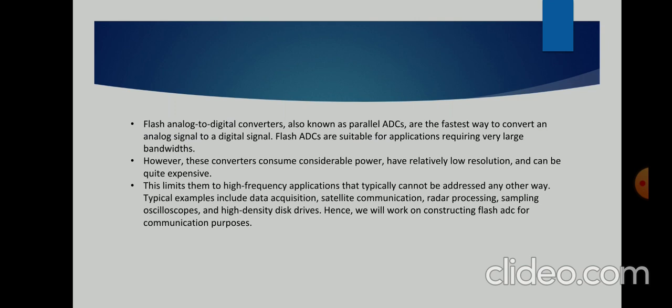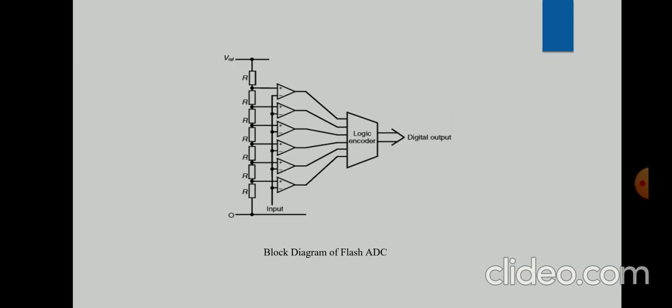Applications include data acquisition, satellite communication, radar processing, sampling oscilloscopes, and high density disk drives. The block diagram of the Flash ADC shows the resistor ladder network, the input voltage, the reference voltage (Vref), and the ground. The logic encoder converts the output of the cascaded comparators into a digital output.